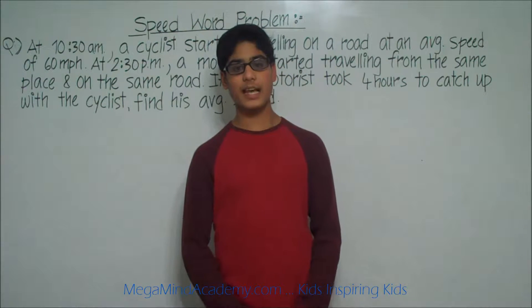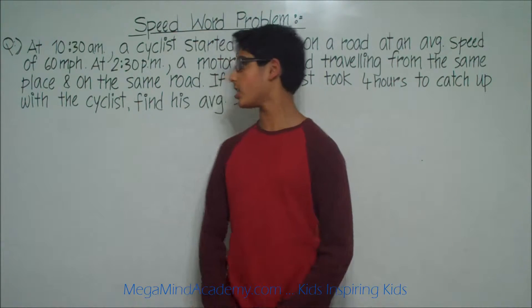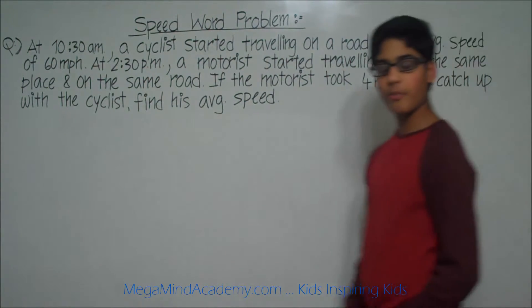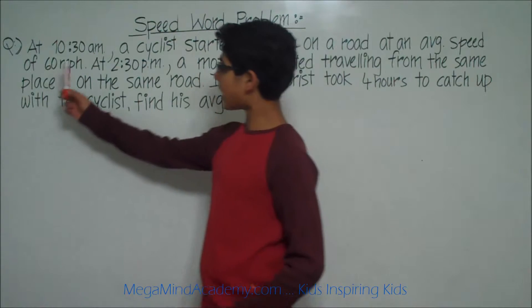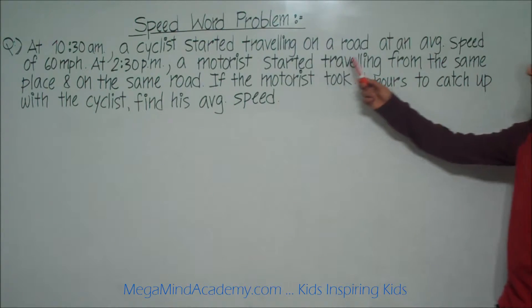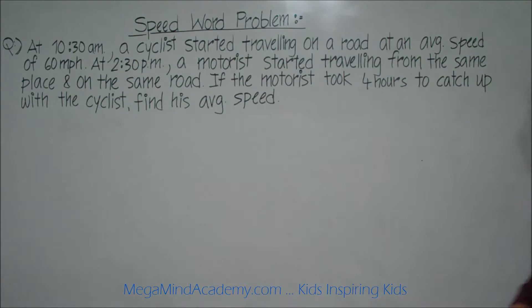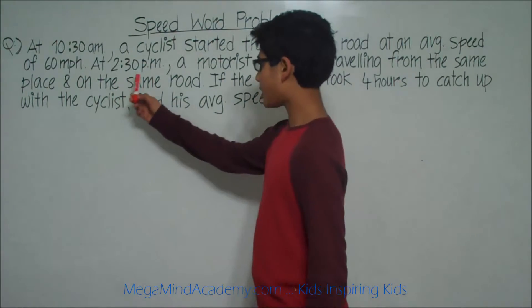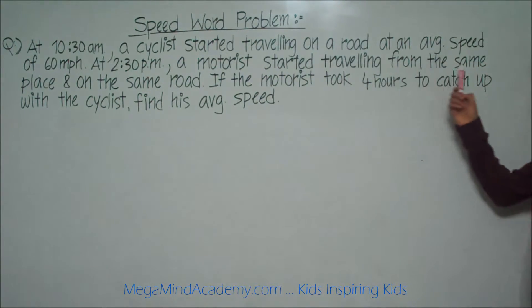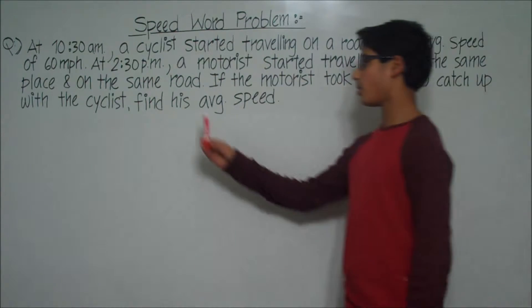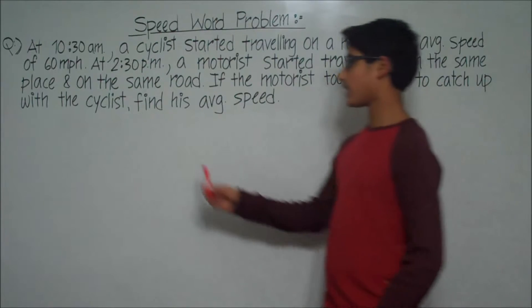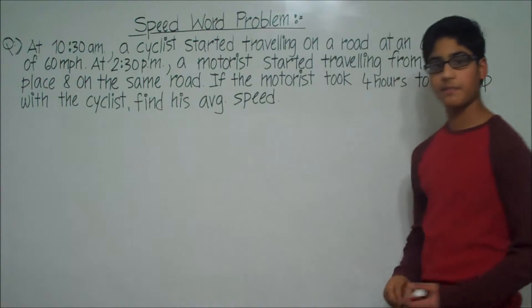Hi! Today we're going to learn about speed word problems. Let's say we have a problem like this: At 10:30 am a cyclist started traveling on a road at an average speed of 60 miles per hour. At 2:30 pm a motorist started traveling from the same place and on the same road. If the motorist took 4 hours to catch up with the cyclist, find his average speed.